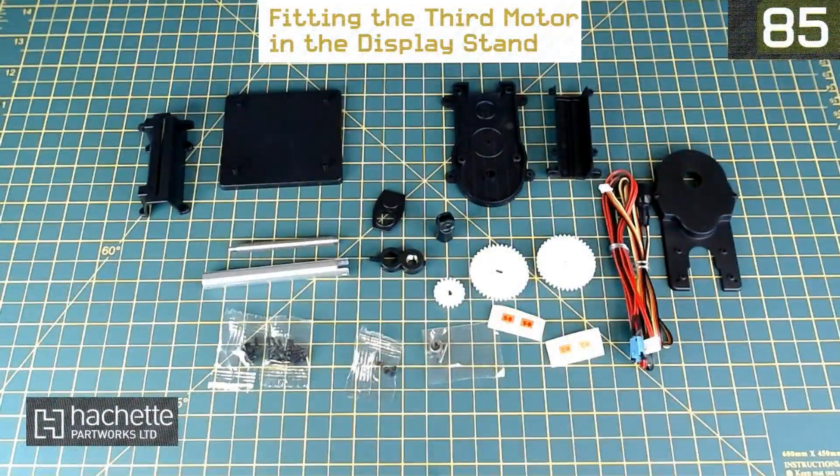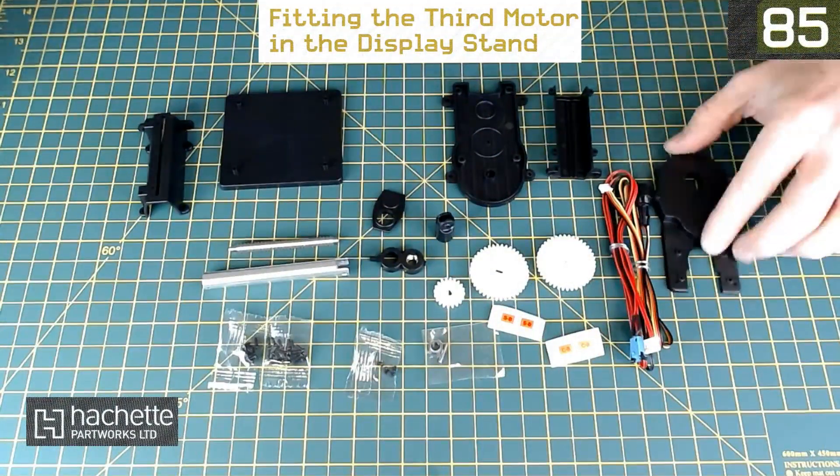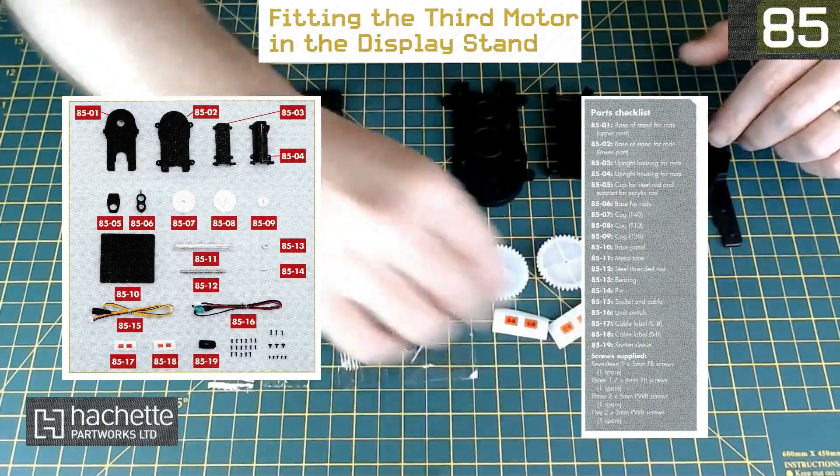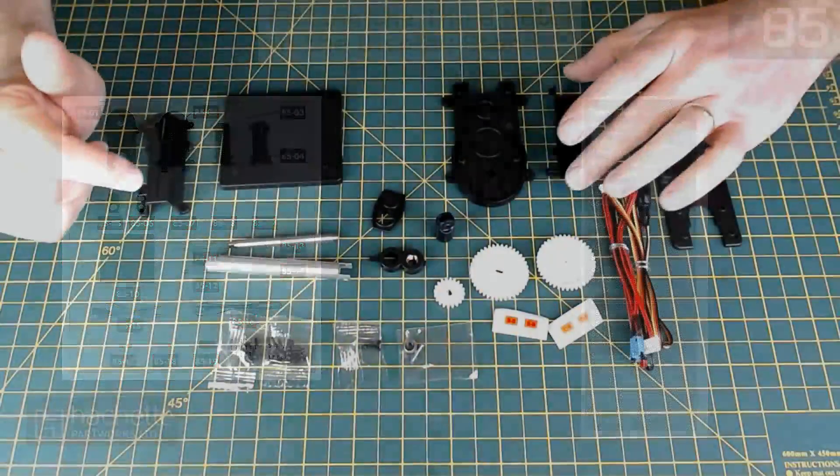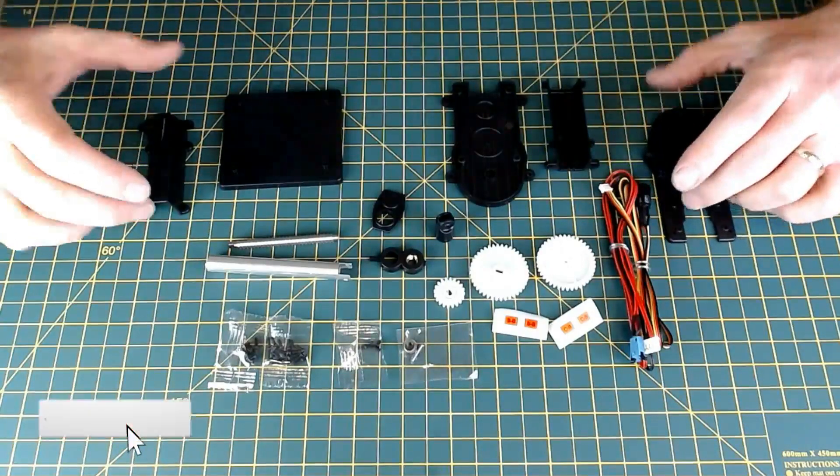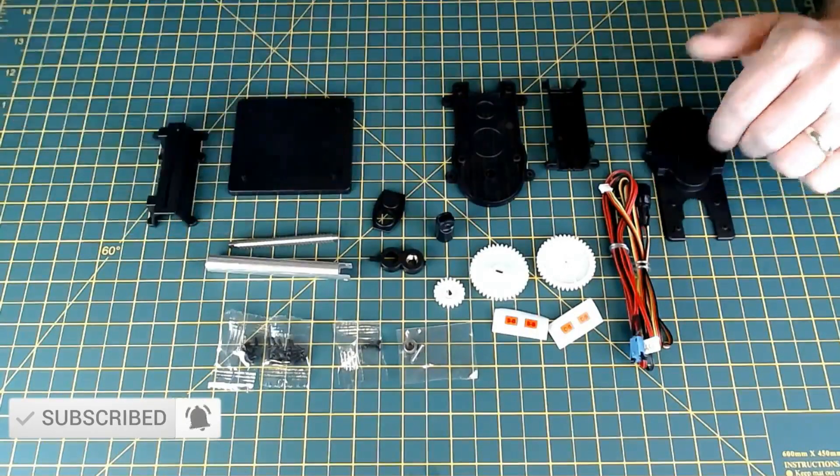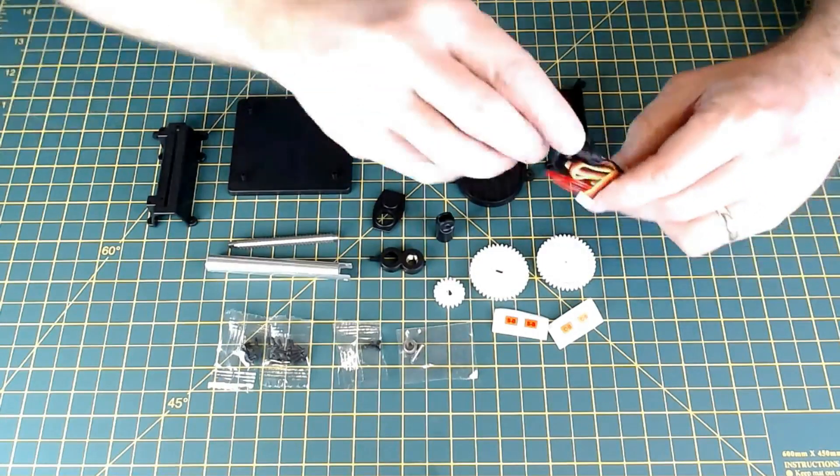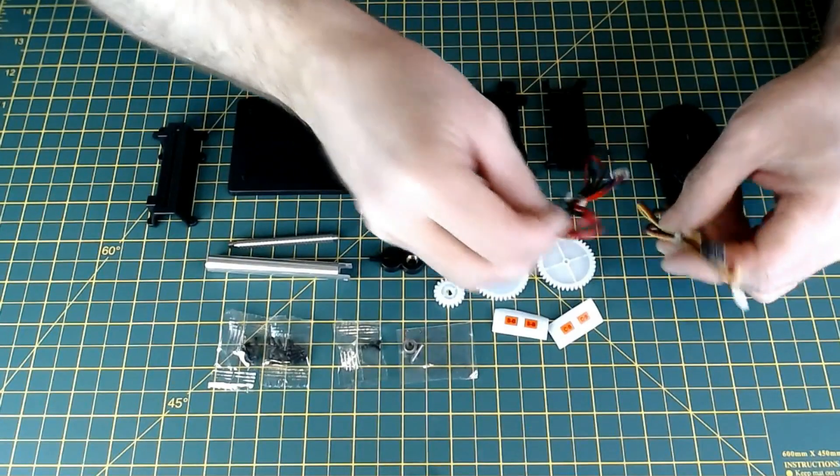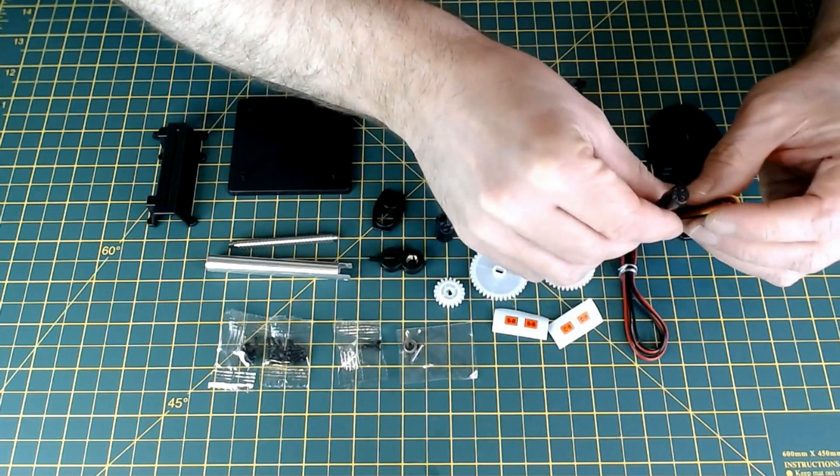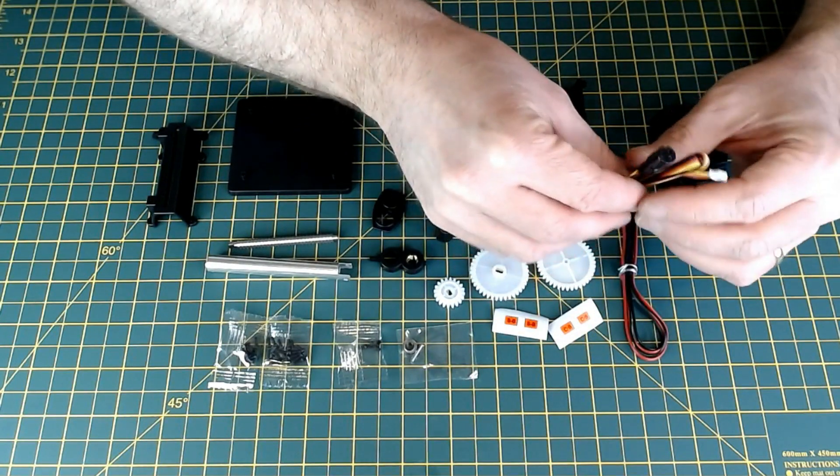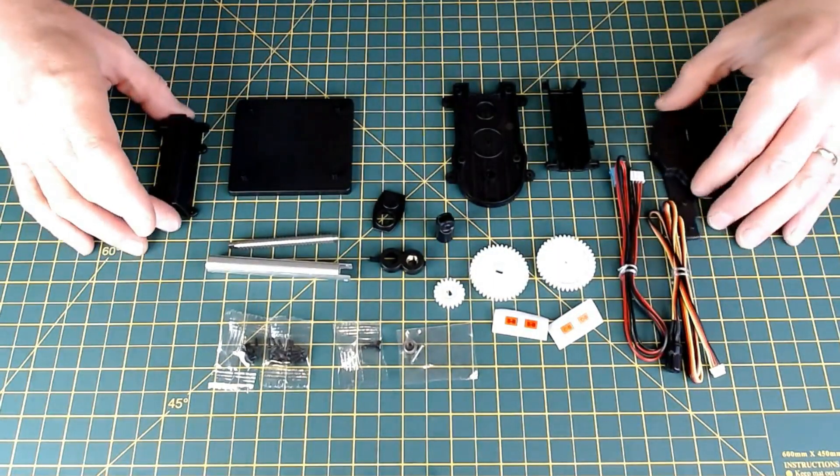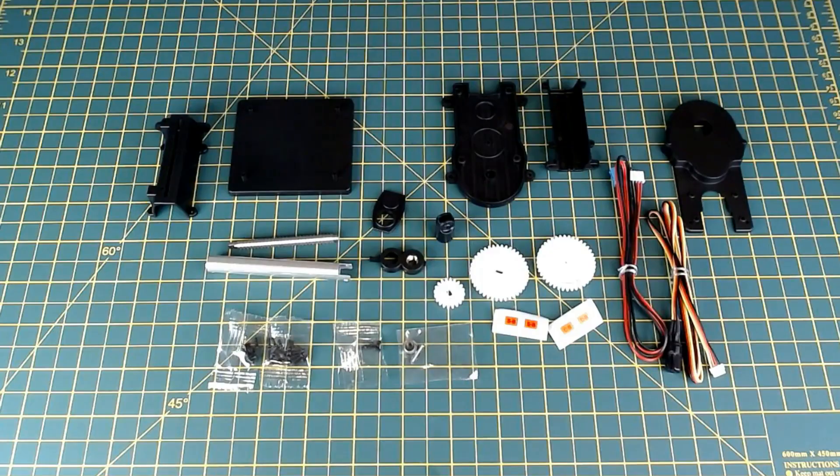Okay, so all the parts are laying out here for issue 85 of the Spitfire. This is the third and final of these display stand motor actuator things. This one we're actually going to be getting fitted into the actual display stand though, and it looks like it's the plug that's going to be going into the actual underside of the Spitfire. All checked off, all there, just going to be getting this built up.